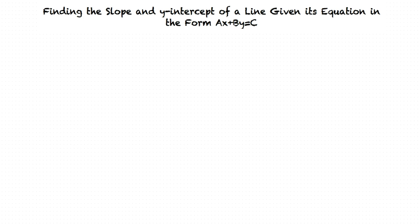The example we will look at in this video is the linear equation 3x plus 2y equals 4. A good approach to find the slope and y-intercept of this equation is to do some algebra to make y alone on the left side with everything else moved to the right, which will turn this equation into slope-intercept form.